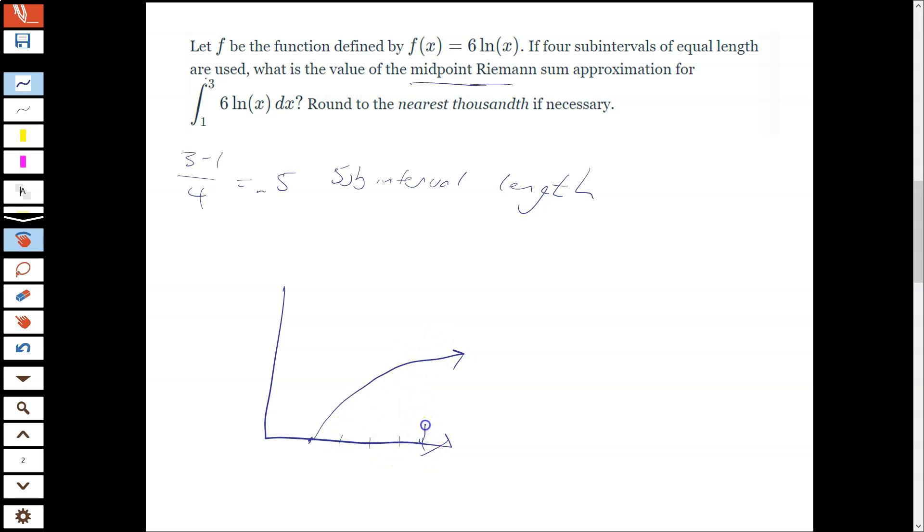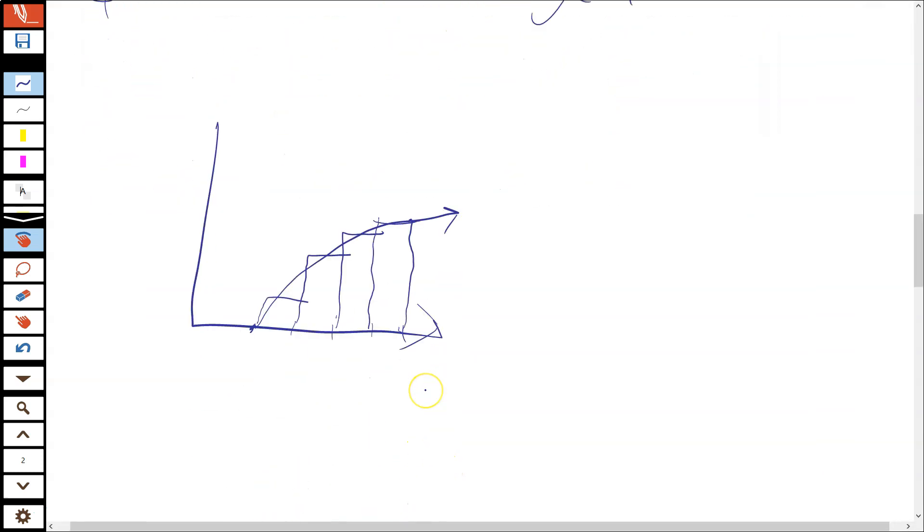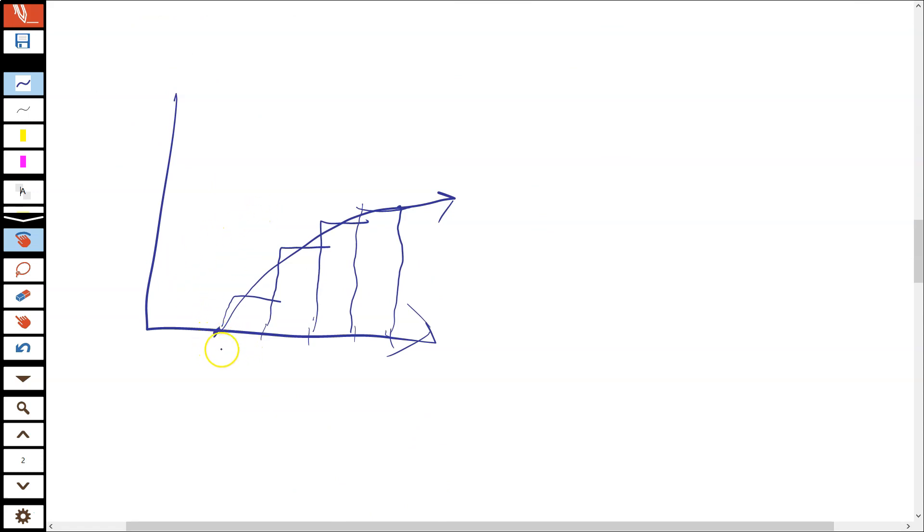But we want midpoint subintervals. So a midpoint subinterval, the hardest one to draw, has the middle of each rectangle on the function. So more or less like that. So this is why this one is the most challenging. Because we have to not only figure out the bounds and the subintervals, we have to figure out the midpoint of each. So I'm going to zoom in a little bit, make this a little bit bigger so I have more space to write. So if our integral is from 1 to 3, the middle is going to be 2, and then we have 1.5, 1.5.